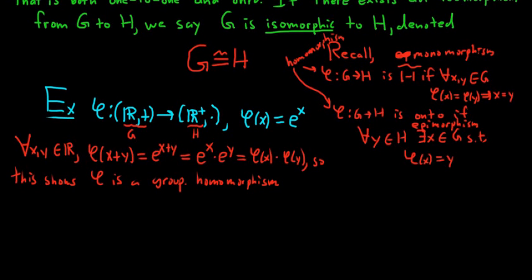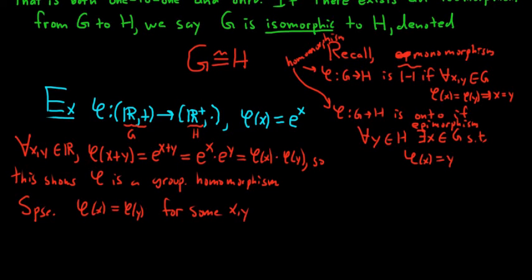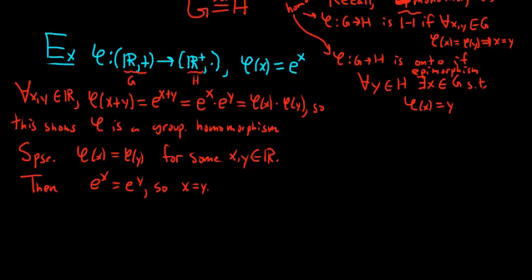Now we show φ is one-to-one and onto. Suppose φ(x) = φ(y) for some arbitrary x, y in ℝ. That means eˣ = eʸ, and we know that implies x = y. So this shows φ is one-to-one.